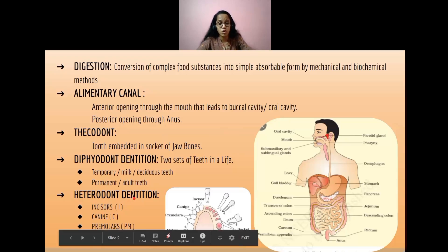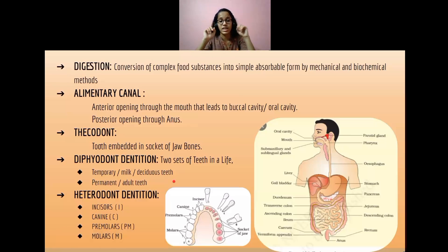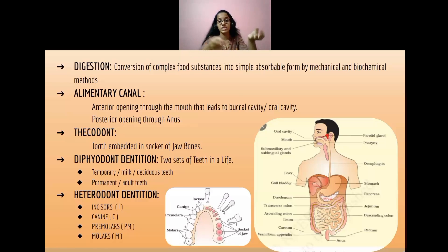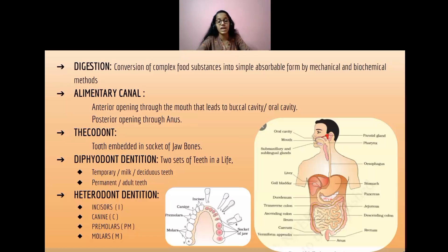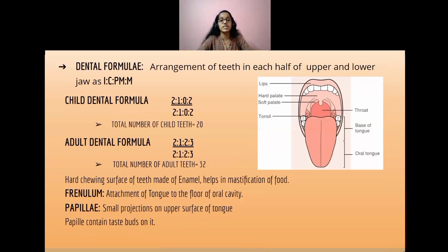Heterodont dentition refers to the four types of teeth present in mammals: incisors, canines, premolars, and molars. Incisors are represented by capital I, canines by capital C, premolars by capital P, and molars by capital M.